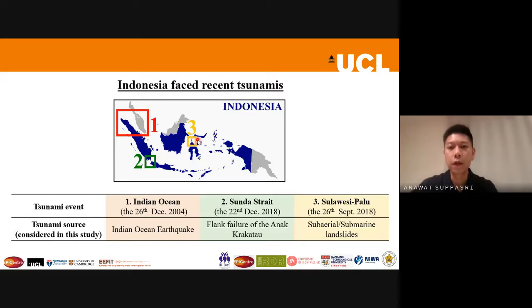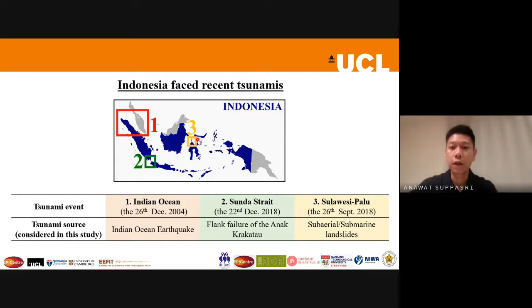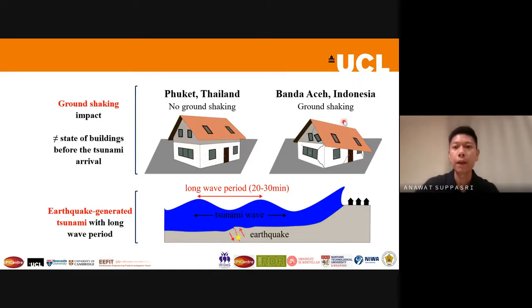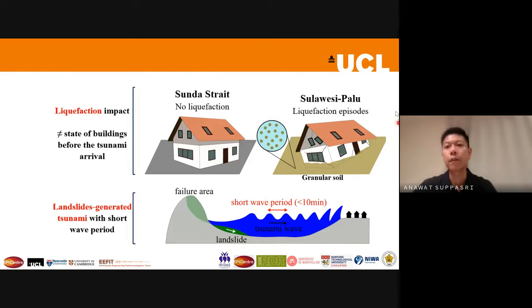The third event is the 2018 Palu tsunami. Because of the strike-slip mechanism, ground shaking was strong, but the tsunami was mainly generated by submarine landslides, which produced a short wave period. The ground shaking also caused liquefaction, which was not observed in the 2004 case. So we compare the characteristics of building damage from different types of tsunami and earthquake, with or without ground shaking, across Thailand and Indonesia, examining wave period and liquefaction impact.